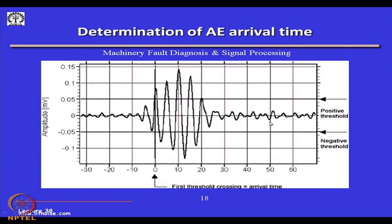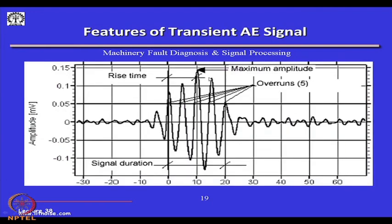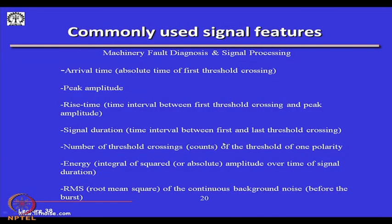We usually require a multi-channel system in machine structures so that by the method of triangulation we can find out the source of the acoustic emission. In the time domain, we can set many triggering events. For example, the number of peaks beyond a positive threshold can be used to quantify AE signals — including the first threshold crossing, the arrival time, maximum amplitude, number of overruns, and signal saturation.